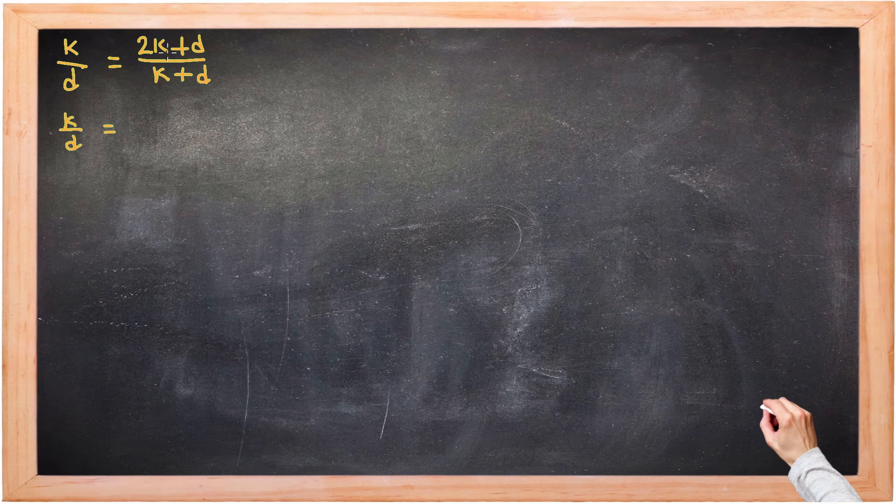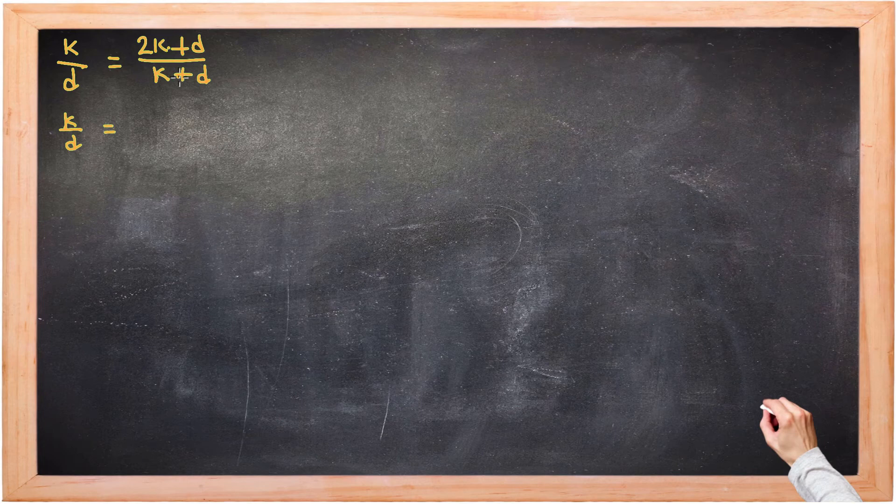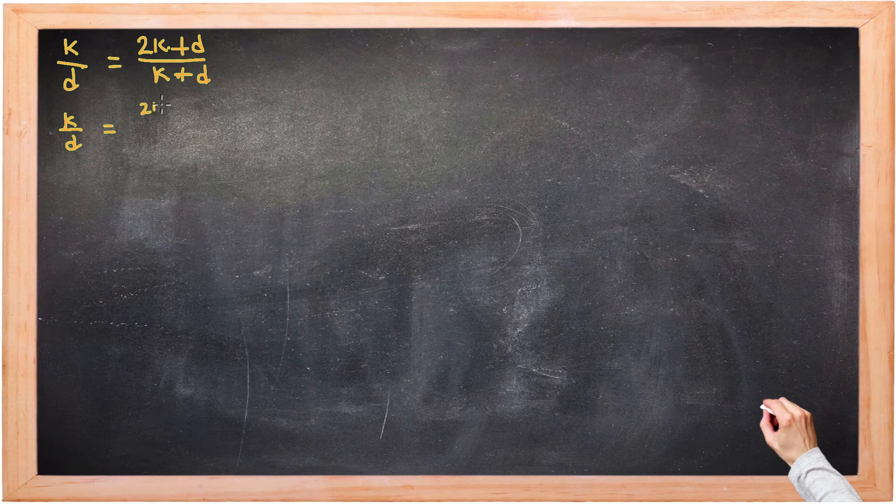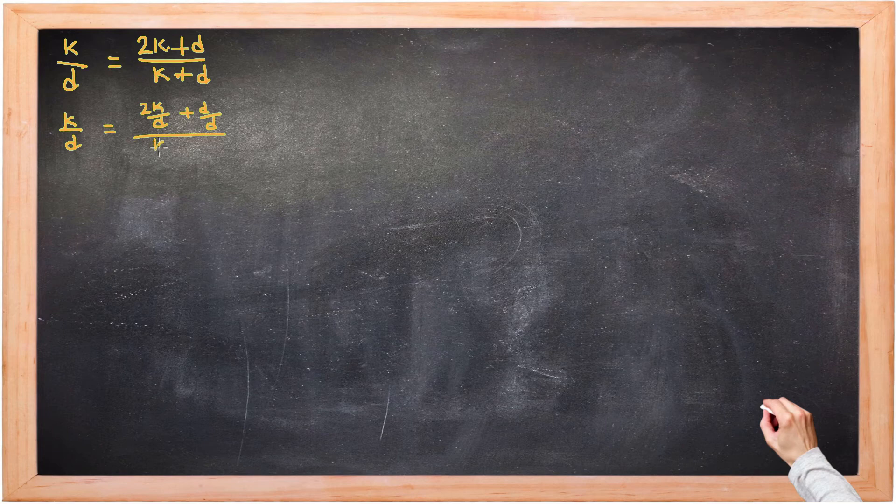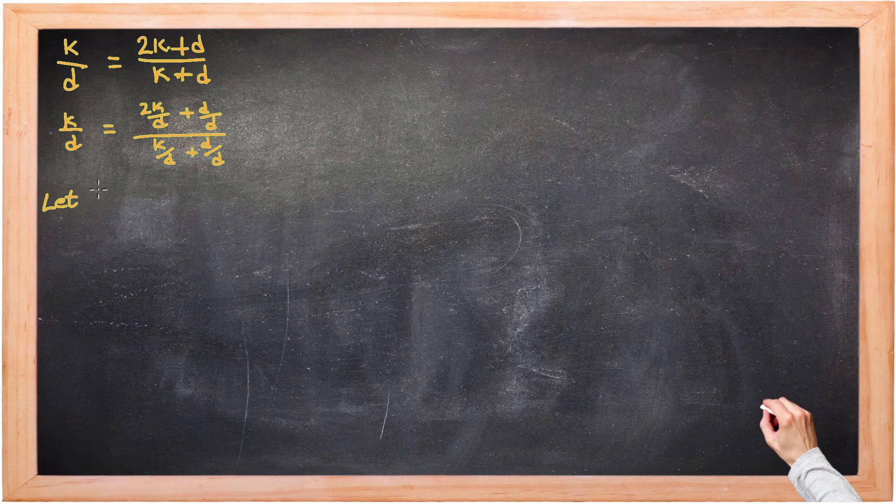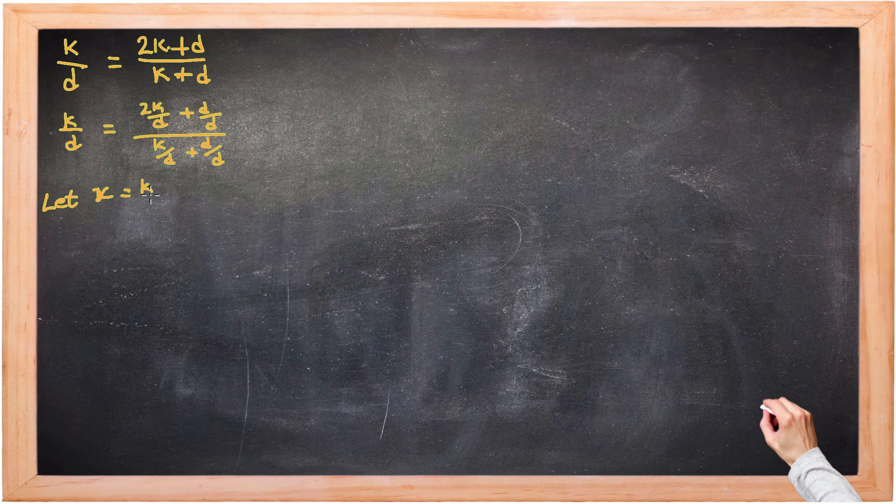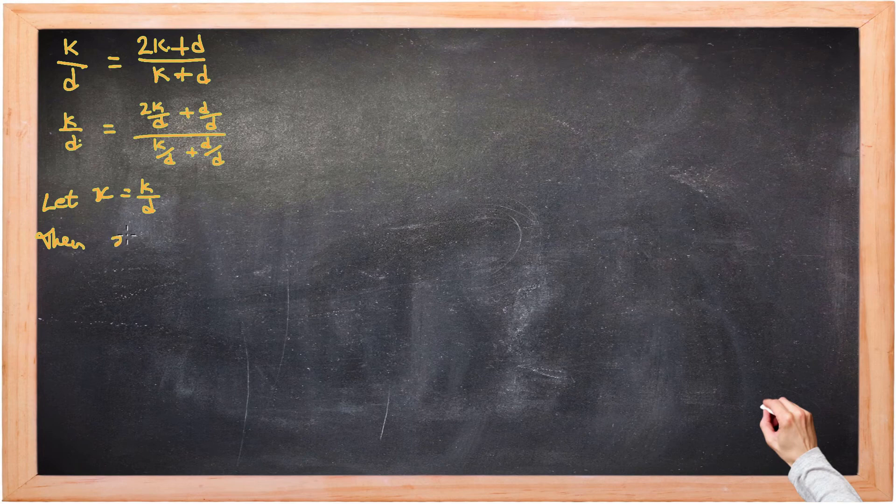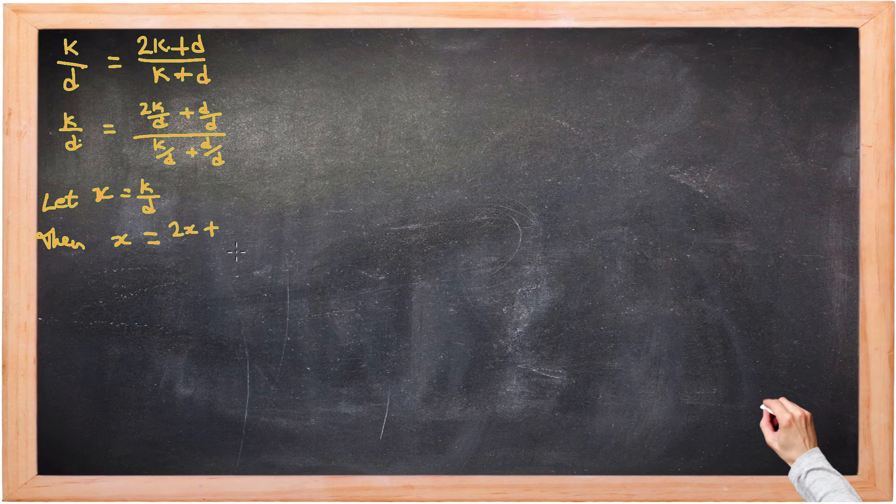First move, let's divide top term and the bottom term by d. So both terms on the top will get divided by d. And both terms on the bottom of the fraction get divided by d. Now I'm interested in the ratio of kites to darts. So let's call k over d x. And what we're looking at is x equals 2x plus d over d is just 1 divided by x plus 1.